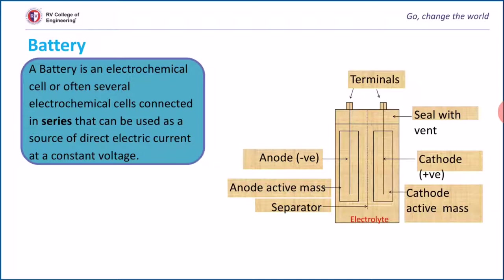Anode contains active material which spontaneously takes part in oxidation reaction. Cathode contains active material which spontaneously takes part in reduction reaction. Electrolyte helps in ionic conduction and provides a medium for transfer of ions from one compartment to the other.